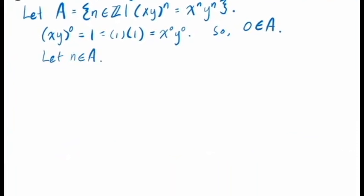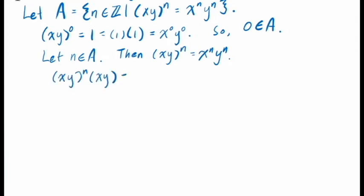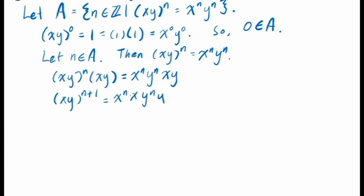Next, we let n be an arbitrary element in A, giving us the equation xy to the n equals x to the exponent n times y to the exponent n. To use the principle of mathematical induction on the entire set of integers, we have two things to prove: that n plus 1 belongs to the set A, and that n minus 1 belongs to the set A. To prove n plus 1 belongs to A, we multiply both sides of our assumed equation by xy. On the left-hand side we get xy to the exponent n times xy, which is xy to the exponent n plus 1. On the right-hand side, shuffling the multiplication gives us x to the exponent n plus 1 times y to the exponent n plus 1, which proves n plus 1 belongs to the set A.